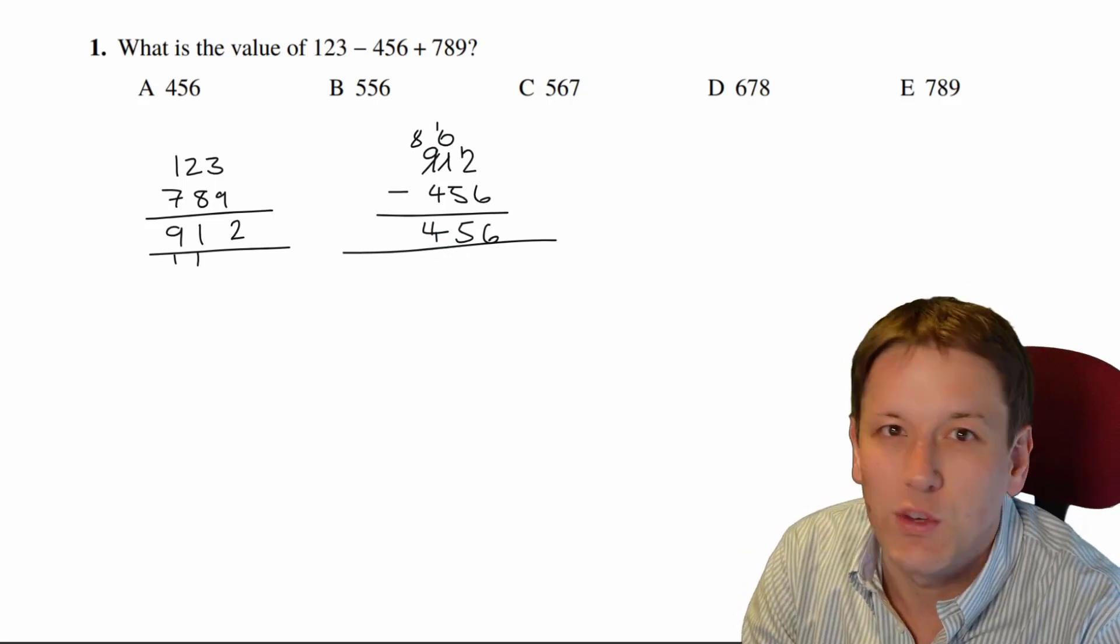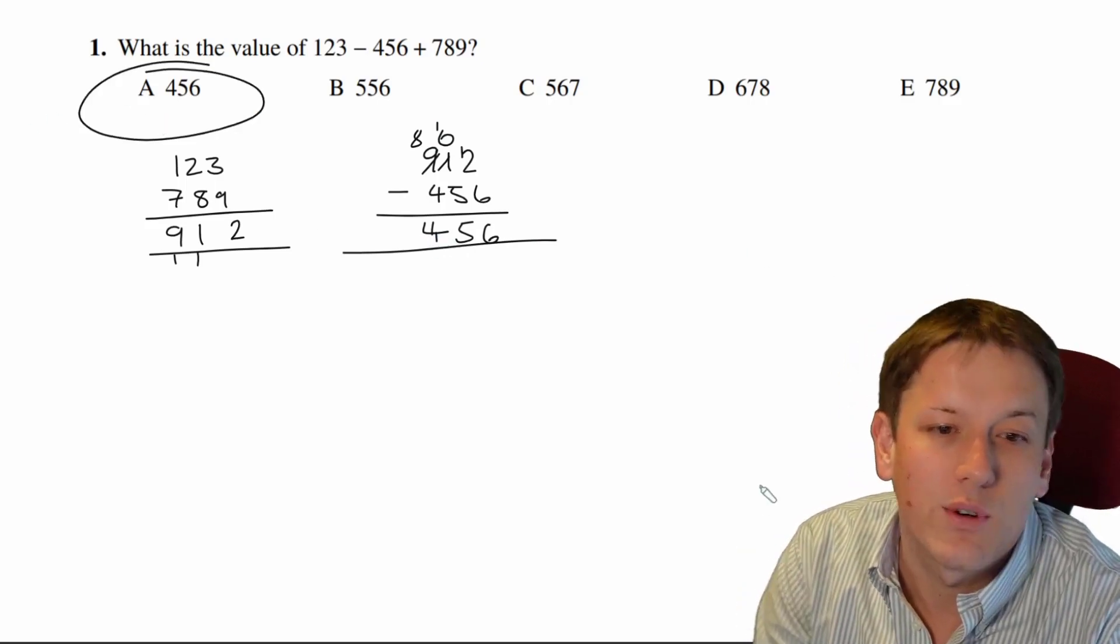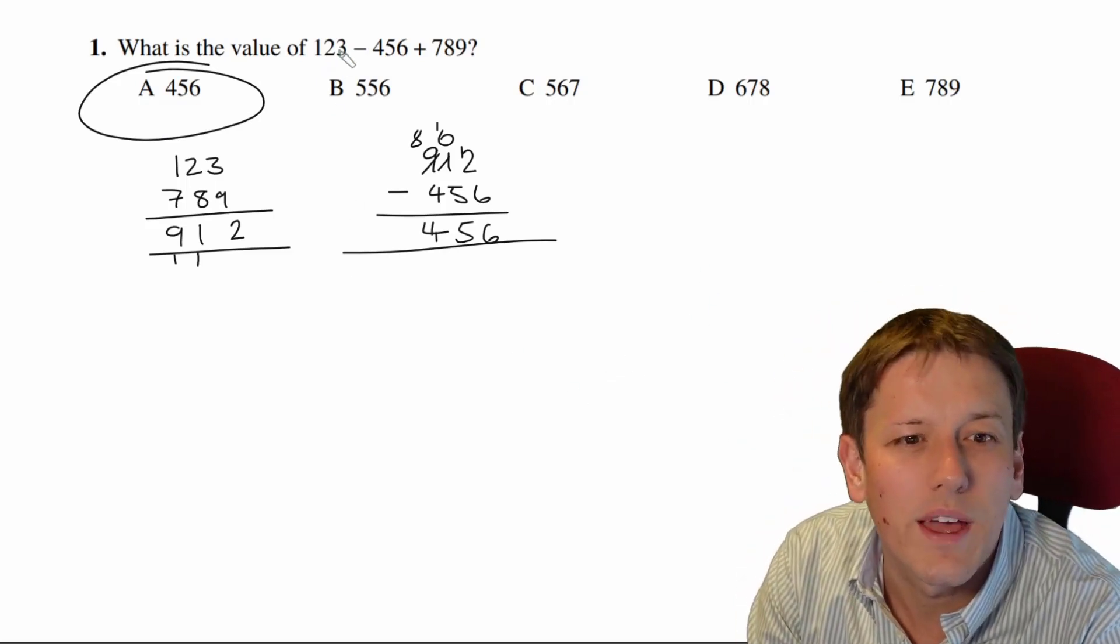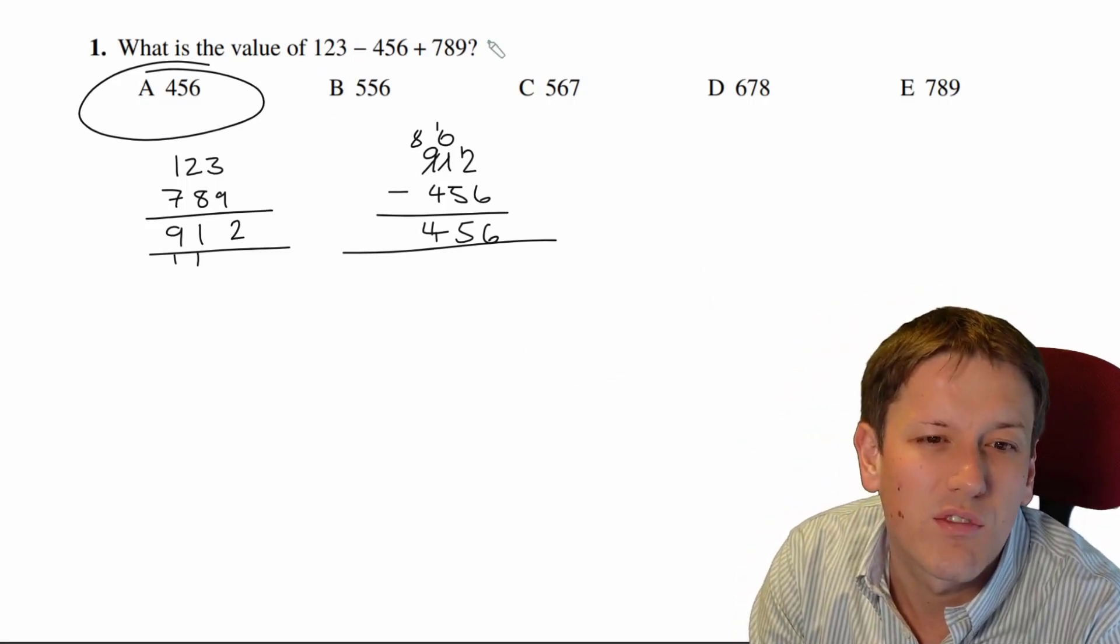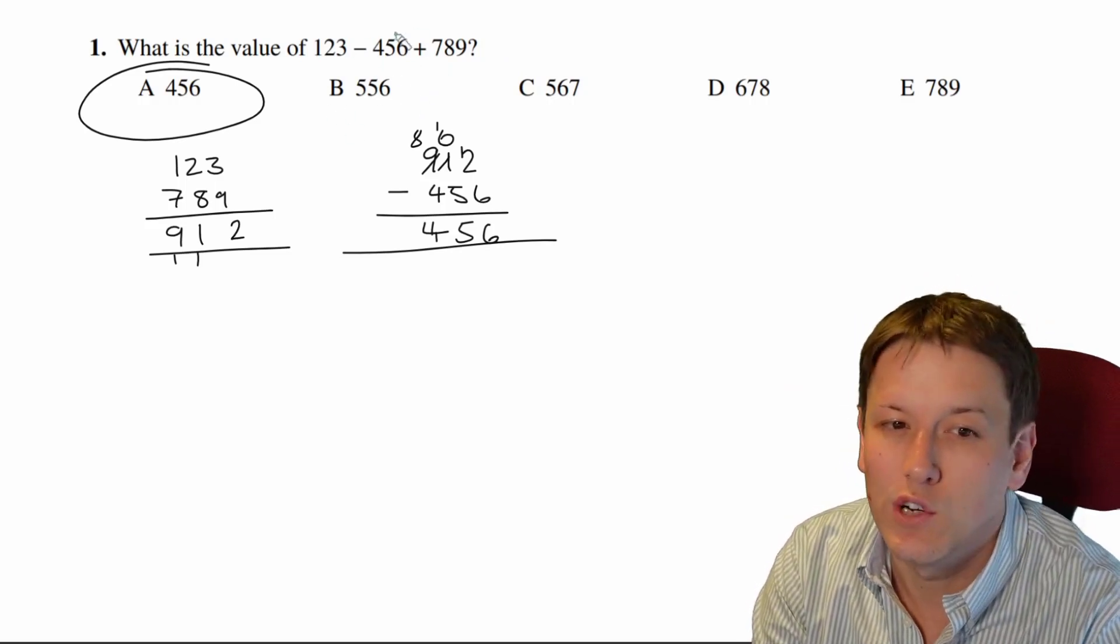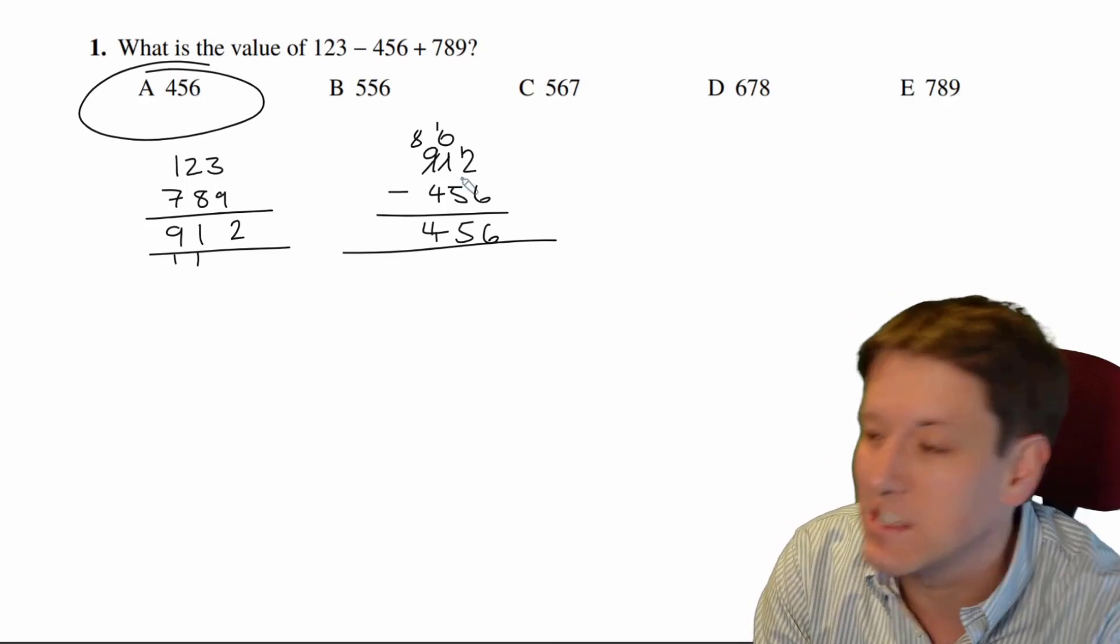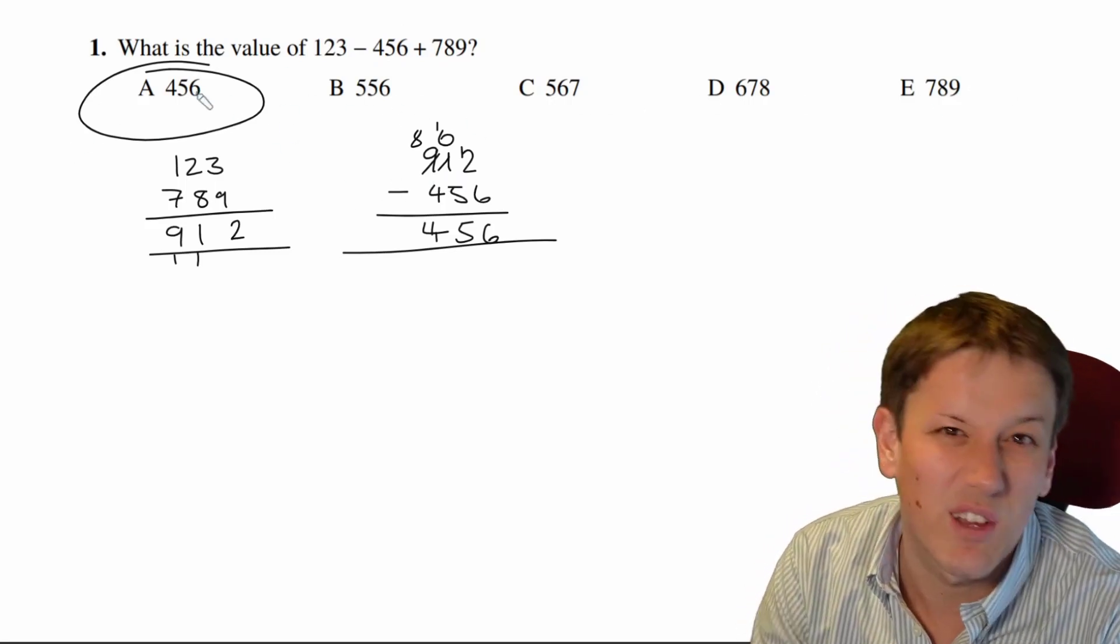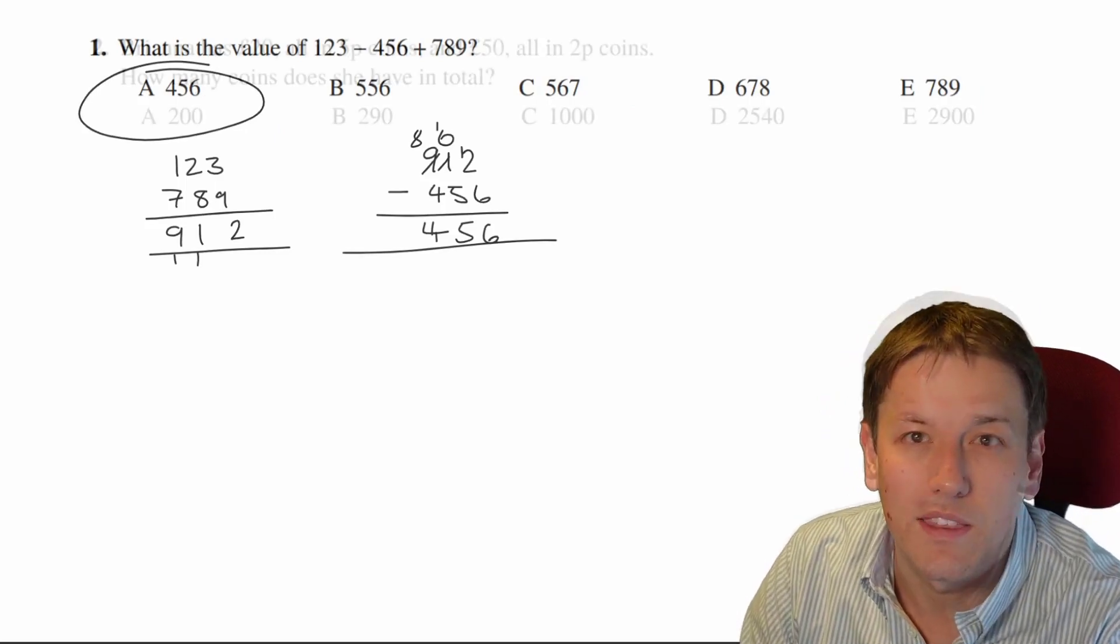So do the subtraction however you want to. The answer is A, 456. Notice you could also just do this in a more approximate way. 123 plus 789 is about 900, and then if I take off about 450, I'll get about 450. There's really no other answers competing with it here, so you might be able to go for the answer A more quickly there.